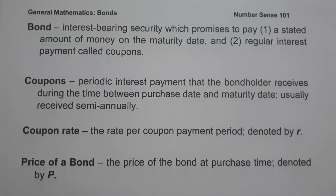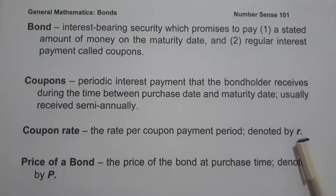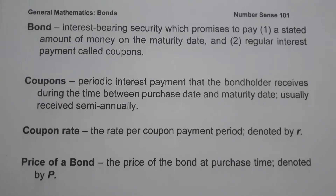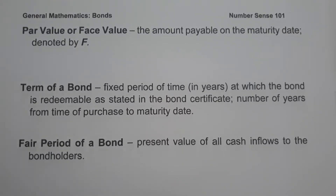The coupon rate is the rate per coupon payment period and is denoted by small letter r. The price of a bond is the price of the bond at purchase time and is denoted by capital letter P. We also have par value or face value, which is the amount payable on the maturity date, and par value is denoted by capital letter F.